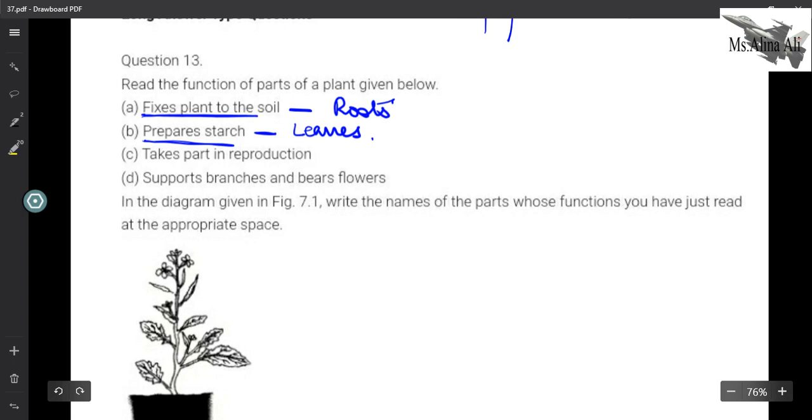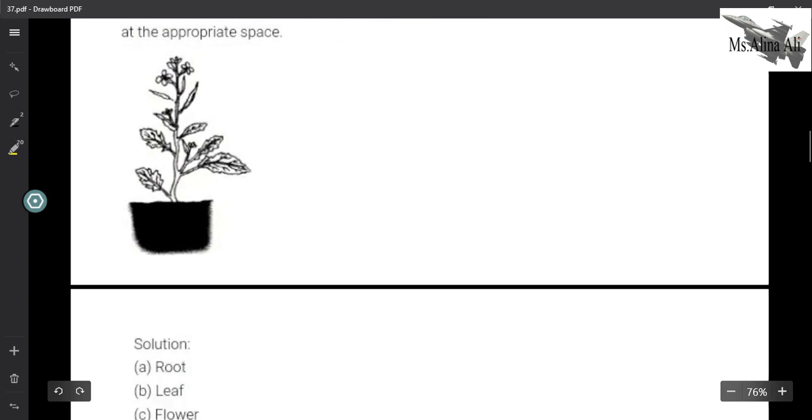After that, next one is takes part in reproduction. This we just saw in the first question - it is the flowers that take part in reproduction. Next is supports branches and bears flowers. It is of course the stem. So we have done this one.